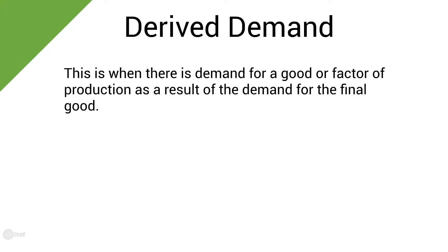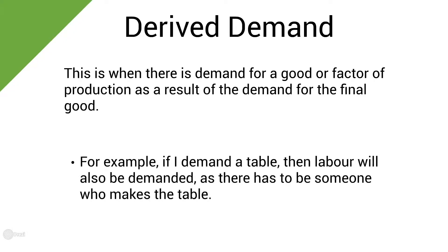The next definition is derived demand. This is when there is demand for a good or a factor of production as a result of the demand for the final good. An example is if I demanded a table, then labour and capital will be used to produce this table. So me demanding the table also results in demand for labour and capital to make it.